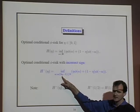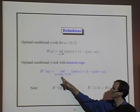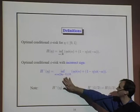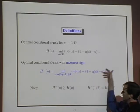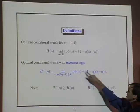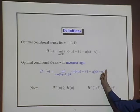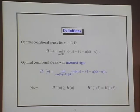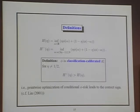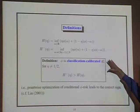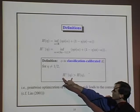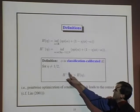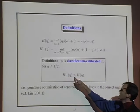What happens when we do the optimization but we're forced to get the sign wrong? We minimize now not over all values of f(x) but over values that have the wrong sign. In the case where phi is convex, the optimal choice with the wrong sign is always zero, so this thing is just phi of zero for convex cost functions. We say that the cost function phi is classification calibrated if whenever the conditional probability is different from one-half, getting the sign wrong forces us to have a bigger value of the conditional phi risk. So the optimum with the sign wrong is strictly worse than the optimum.